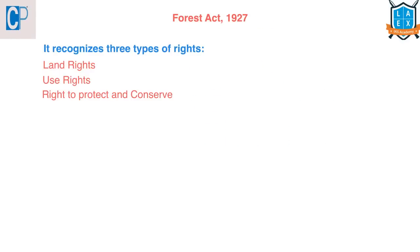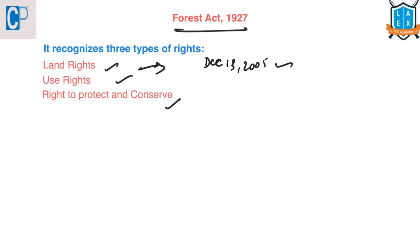The Indian Forest Act of 1927 also recognizes the forest dwellers' rights and makes conservation more accountable. This act recognizes three types of rights: land rights, use rights, and the right to protect and preserve. Land rights are given to people who have been cultivating the land before December 13, 2005. Use rights provide the right to use and collect minor forest produce. The right to protect and conserve gives communities the right to protect and manage forests.